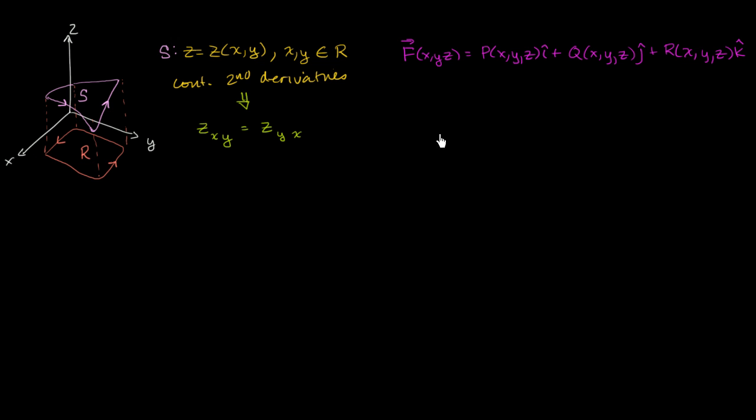So let me write it out. So Stokes' theorem tells us that f dot dr over some path, and the path that we care about is essentially this path right over here. I'll do it in blue. It's this path right over here. And this is the boundary. This is the boundary of our surface. So this is c right over here.